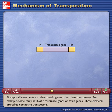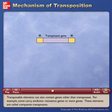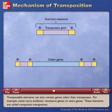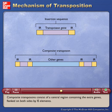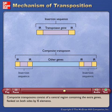Transposable elements can also contain genes other than transposase. For example, some carry antibiotic resistance genes or toxin genes. These elements are called composite transposons. Composite transposons consist of a central region containing the extra genes flanked on both sides by IS elements.